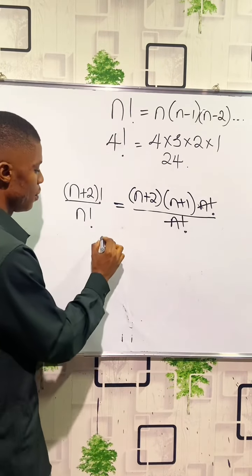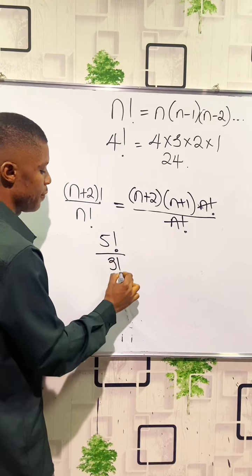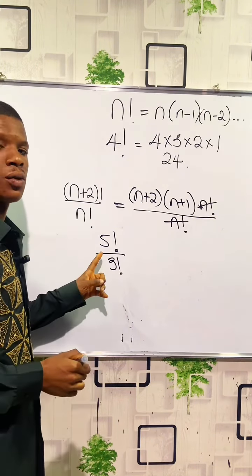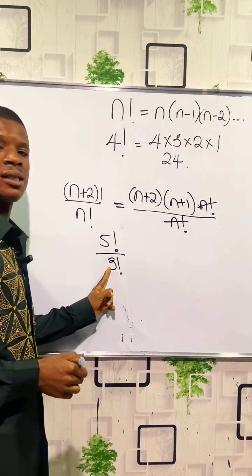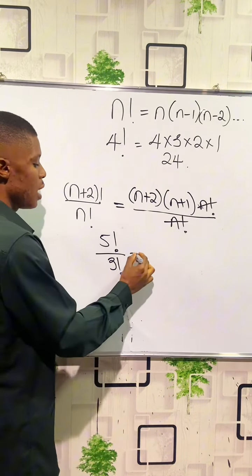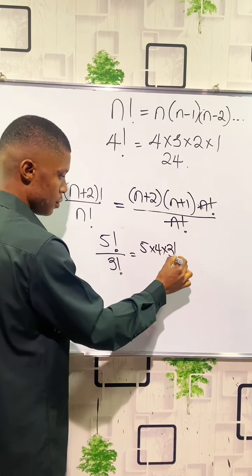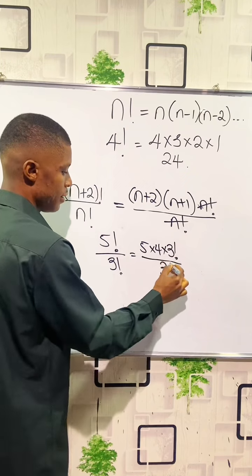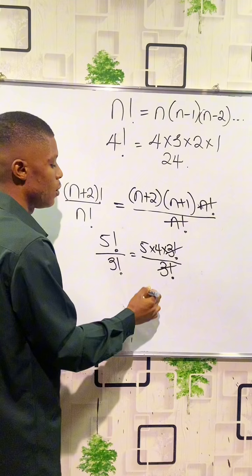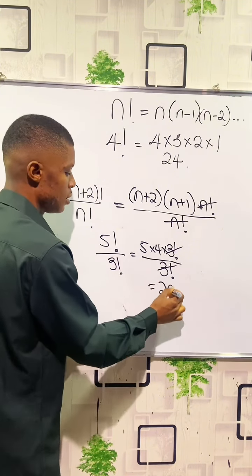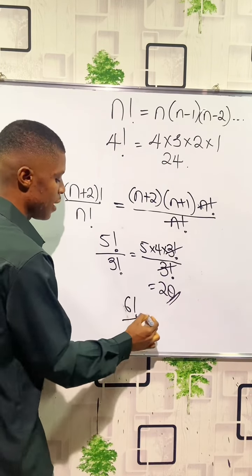Let's take a clear example: 5! divided by 3!. We expand the numerator so that it contains all the terms in the denominator. So we write it as 5 times 4 times 3! divided by 3!. The 3! cancels out, leaving 5 times 4, which equals 20. So the answer is 20.